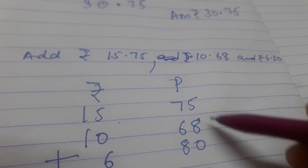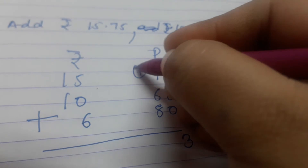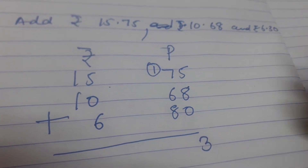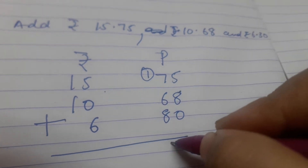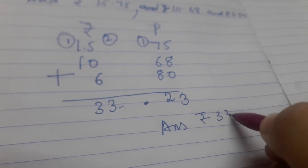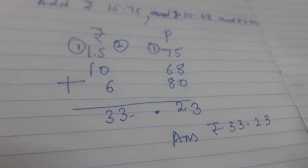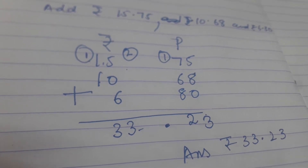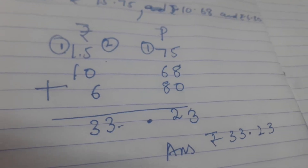Now you will add like simple addition. Start from one side. 8 plus 5 is 13. 13 plus 0 is 13 — write 3, carry over 1. Then 7 plus 1 is 8. 8 plus 6 is 14. And 14 plus 6 is 22 — write 2, and this 2 will be carried over to the Rs. side. Then 5 plus 2 is 7. And 7 plus 6 is 13 — again 1 is carried over. Then 1, 2, 3 — here will be 3. Then Rs. and paise will be separated by using a point. So your answer will be Rs. 33, 23 paise.